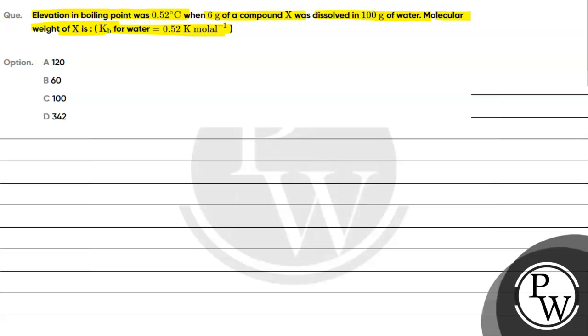Molecular weight of X is? Kb for water is being given as 0.52 Kelvin per molal. Option A is 120, option B is 60, option C is 100, option D is 342.